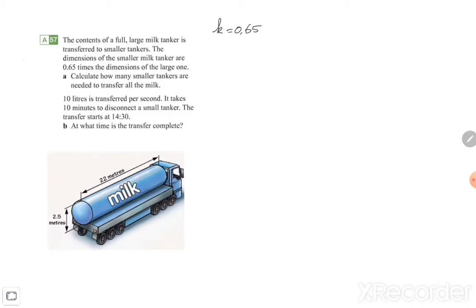Calculate how many smaller tankers are needed to transfer all the milk. What we calculate is the volume of the smaller tanker. It is 0.65 to the power of 3, multiplying with the volume of the normal tanker.